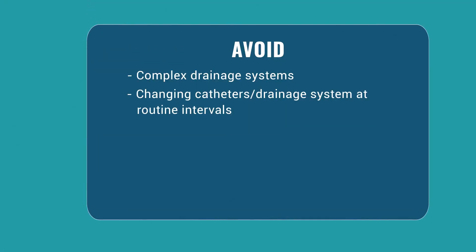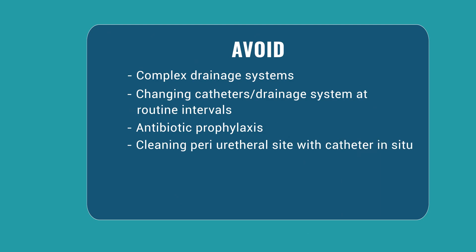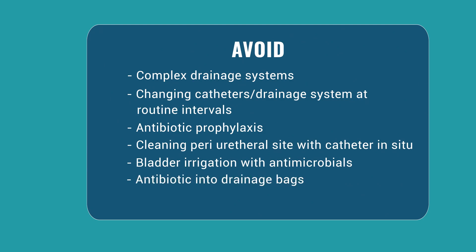It is also essential to understand the misconceptions around CAUTI prevention. Several interventions were suggested but later found not to be useful. These include use of complex drainage systems, changing catheters or drainage bags at frequent intervals, using antibiotic prophylaxis during insertion or maintenance, cleaning the periurethral site with antibiotic solutions, bladder irrigation with antimicrobials, and adding antibiotics to drainage bags. Routinely screening all patients for asymptomatic bacteriuria is also not found to be useful. All these interventions should be avoided.